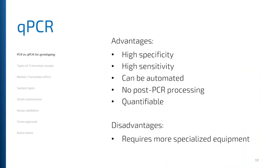The advantages of qPCR are that it's highly specific — your exact sequence has to be present to observe a signal. It's also very sensitive; you don't need much amplicon to observe a signal. It can be automated, which is what we do at Transnetics. There's no processing after PCR — the run itself is what you use to interpret your results, and it's quantifiable. However, it does require more specialized equipment, and smaller labs may not be able to afford the reagents or disposables required.